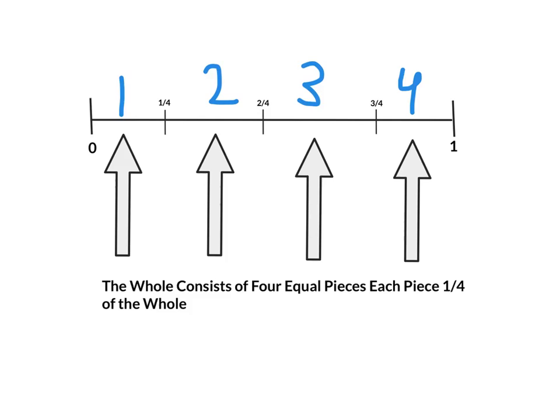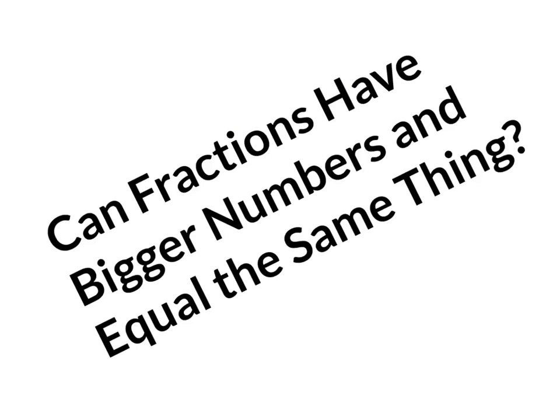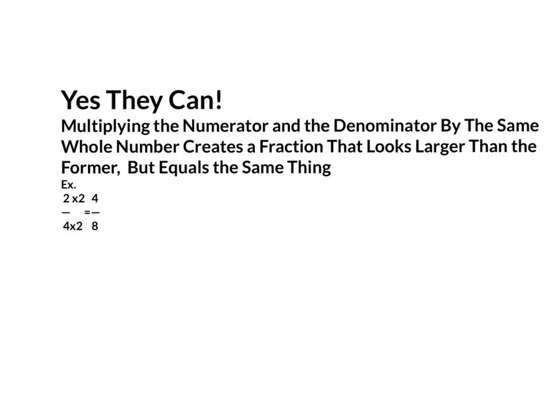Can fractions have bigger numbers and equal the same thing? That may sound confusing, but yes they can. Multiplying the numerator and the denominator by the same whole number creates a fraction that looks larger than the former fraction, but equals the same thing. If that doesn't make sense, I'll explain it a little bit right now. So, take your original fraction, 2 fourths, and you multiply that by 2. So, you multiply the numerator by 2, which gives you 4. Multiply the denominator by 2, which gives you 8. That will give you 4 eighths.